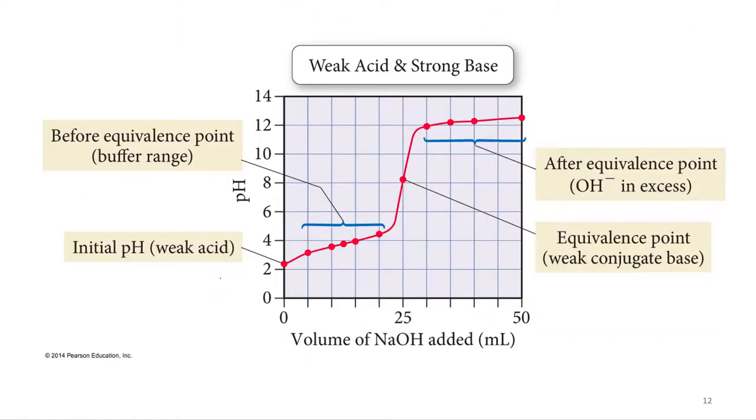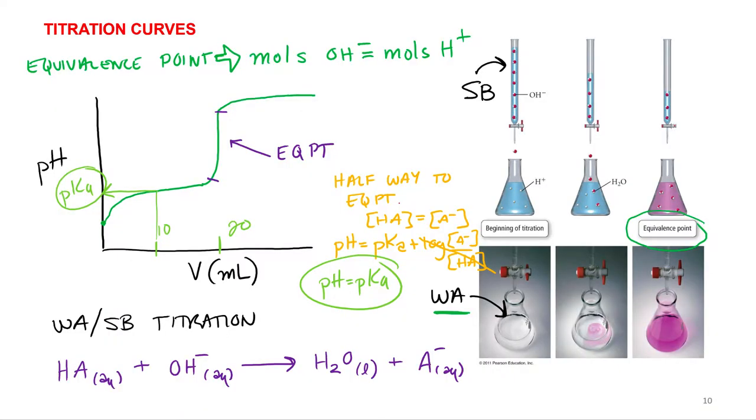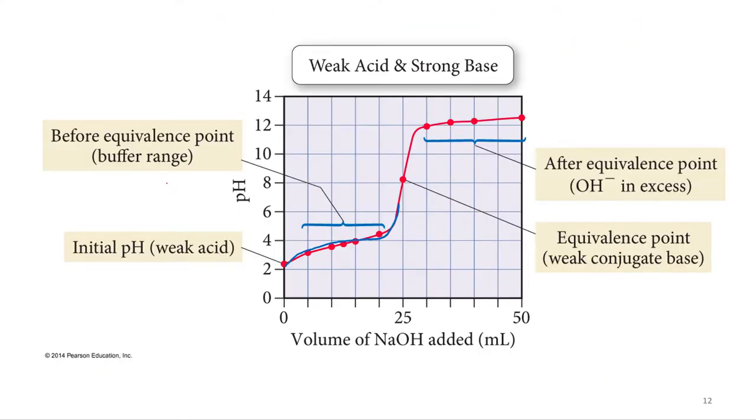For weak acids, it always goes up fast and then it slows down before it goes back up. That's why when I drew this one, I drew that curve kind of like that before pH 10. That's because as you start to titrate your weak acid, you start to produce a weak base. Well, let's write an equation for that.